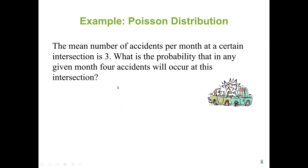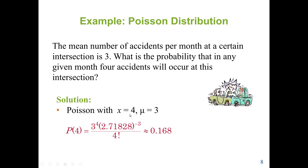Let's see an example. The mean number of accidents per month at a certain intersection is 3. What is the probability that in any given month, four accidents occur at this intersection? We can't use binomial because we don't know the probability of success or failure, but we can use Poisson because we know the mean. The mean mu is 3 and the random variable X is 4. The formula gives us: 3 raised to the power 4, times 2.71828 raised to the power negative 3, divided by 4 factorial — which is 4 times 3 times 2 times 1. The answer is 0.168.